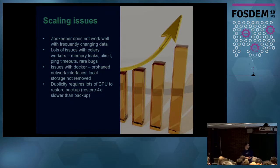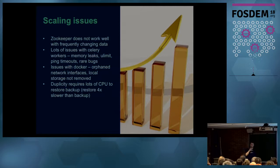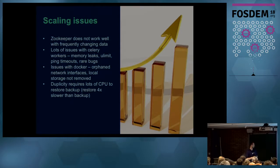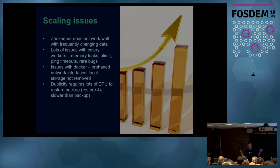We also had problems with Docker. We containerize everything for automatic cleanup, but it turns out that with heavy local hard drive activity and lots of data inside Docker, it sometimes doesn't clean up, and you run out of local space — something we're still fighting. Also, Duplicity has scale problems: backup is reasonably fast, but restore takes four times longer because of how it's written.